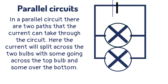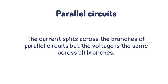In a parallel circuit there are two paths that the current can take through the circuit. The current will split across the two bulbs, with some going across the top bulb and some over the bottom.